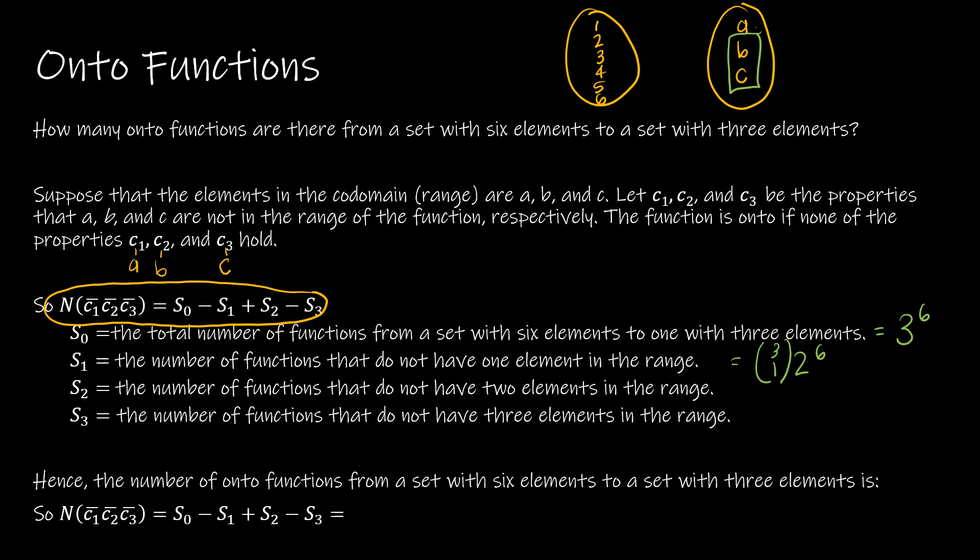For S₂, I'm saying two conditions are met, which means two elements in the co-domain are not being mapped to. So that leaves only C. So that's one element being mapped to, could be mapped to from six different elements. And two conditions—this would be then (3 choose 2), because there are three conditions, and I'm choosing two of them.